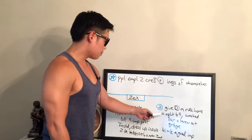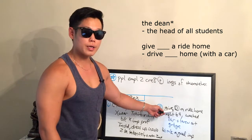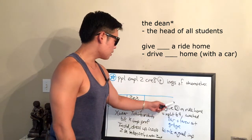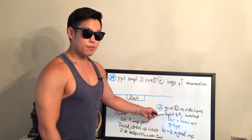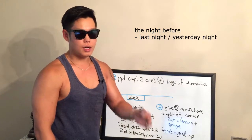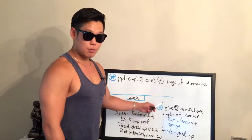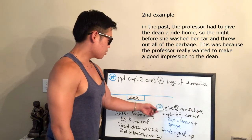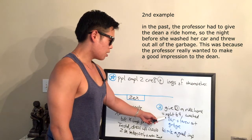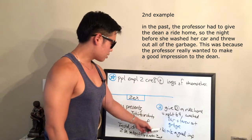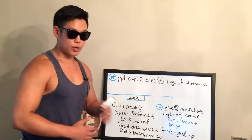The second example: the professor had to give the dean a ride home. The night before, she washed her car and threw out all the garbage — simply to make a good impression. 'The night before' means last night or yesterday night. In addition to this, in the past the professor had to give the dean a ride home, so the night before she washed her car and threw out all the garbage simply because she really wanted to make a good impression on the dean.